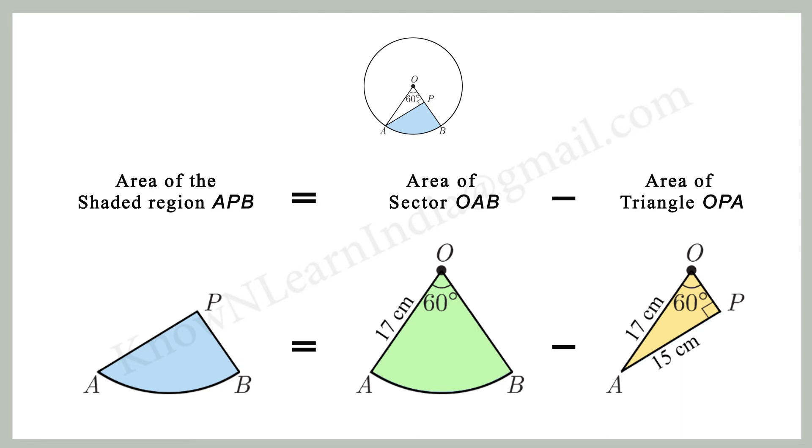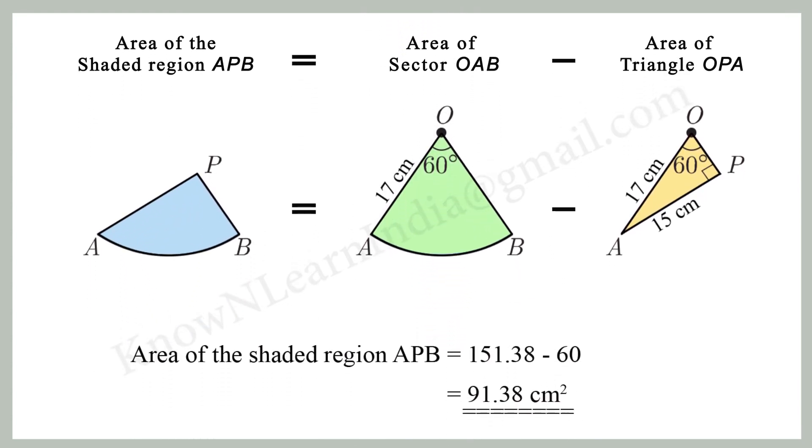Substituting the values of area of sector OAB and area of triangle OPA here, area of the shaded region APB equal to 151.38 minus 60 equal to 91.38 centimeter square.